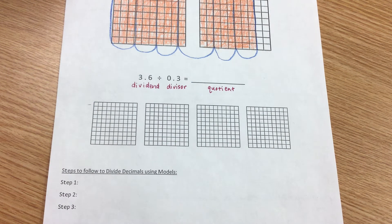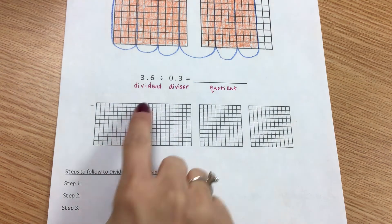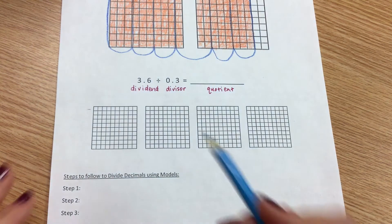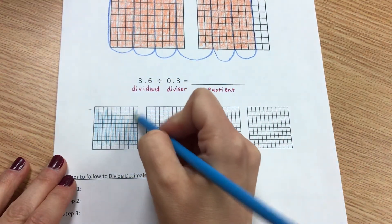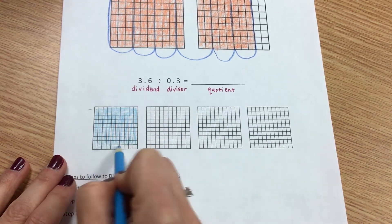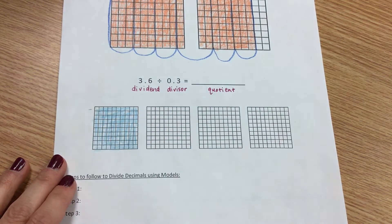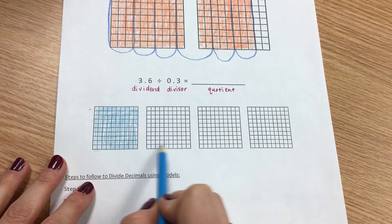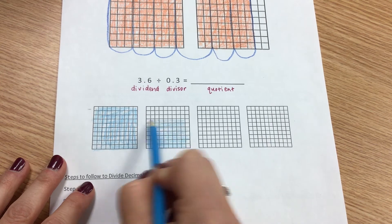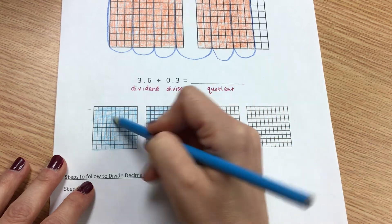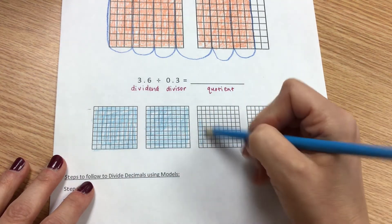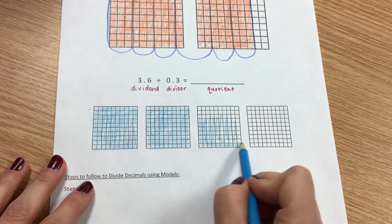So what do we do with our dividend — the number that goes inside the long division sign? We shade it in. So I'm going to shade in my entire first box. I've shaded in 1. But I'm showing a whole number of 3, so I have to shade in 3 boxes. I've shaded in 2 boxes and I've got to shade in another complete box because I have a whole number of 3.